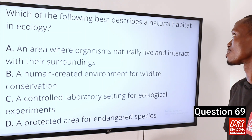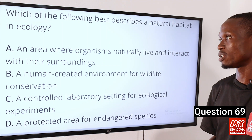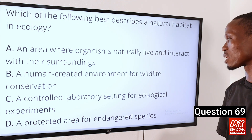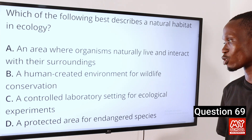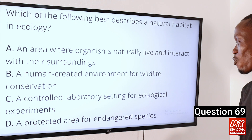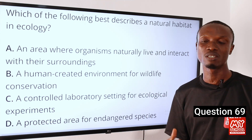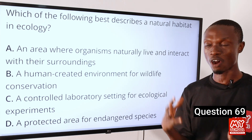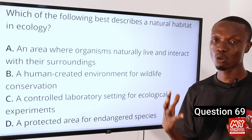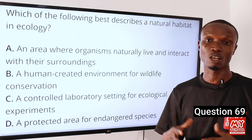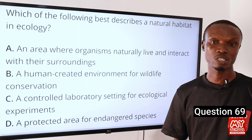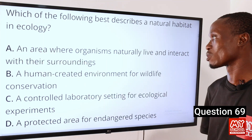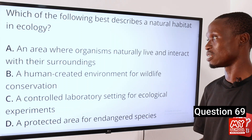Question 69: Which of the following best describes a natural habitat in ecology? A: An area where organisms naturally live and interact with their surroundings. B: A human-created environment for wildlife conservation. C: A controlled laboratory setting for ecological experiments. D: A protected area for endangered species. A natural habitat in ecology is defined as an area where an organism lives naturally and interacts with its environment and surroundings. It encompasses ecological conditions, physical features, and resources which support survival and interaction. So option A is the correct option.